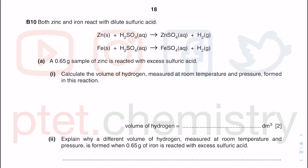Question 10. We have two reactions between metal and acid — zinc and iron. Zinc in the periodic table is Zn, and iron is Fe. They both react with acid. Metal plus acid gives you metal salt. The salt you get from sulfuric acid is called sulfate salt, and you also get hydrogen gas.